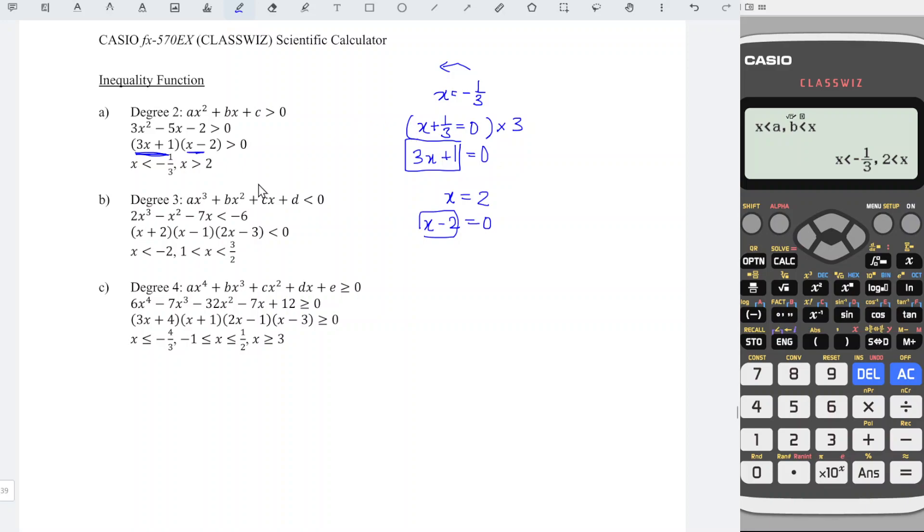For part B, degree 3, also the same. Menu, look for inequality, degree 3, and we choose the correct region, so this is less than, number 2.